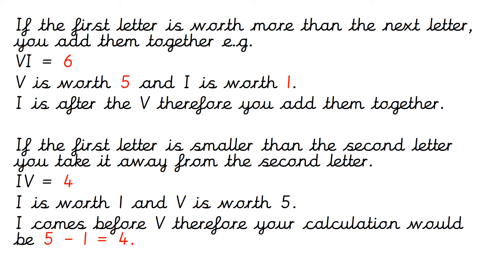If the first letter is smaller than the second letter, you take it away from the second letter. So if we look at IV, IV is worth 4. I is worth 1 and V is worth 5. The I comes before the V, which means that your calculation would be 5 minus 1, which is 4. So you take it away. So if the second letter is larger than the first letter, you take the first letter away from the second letter.